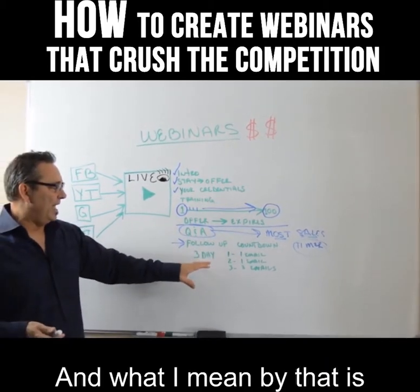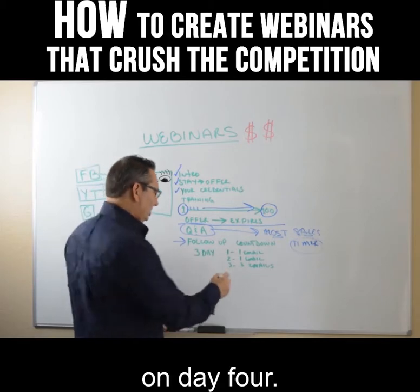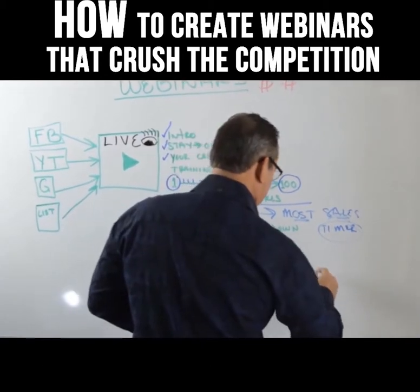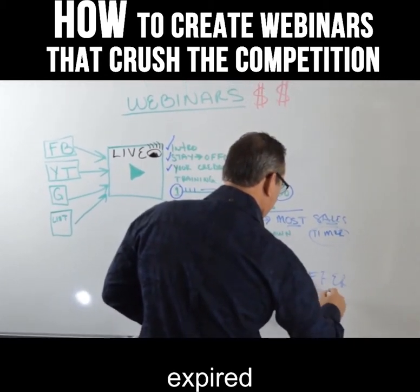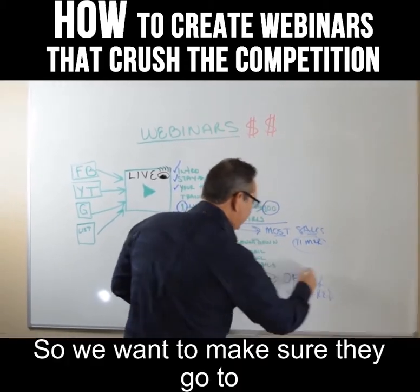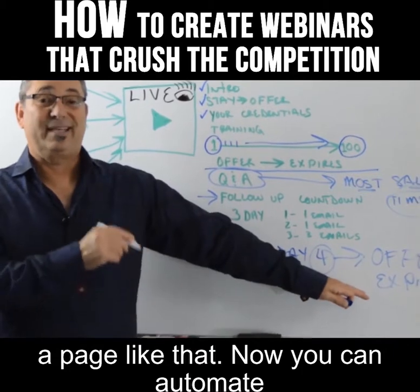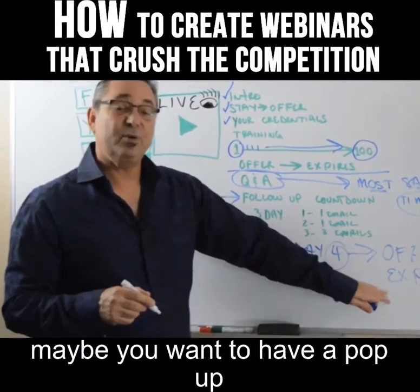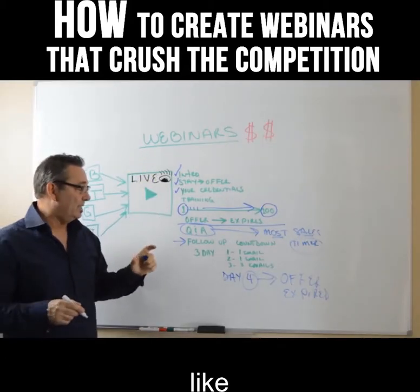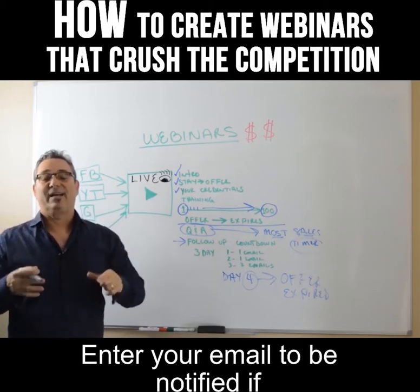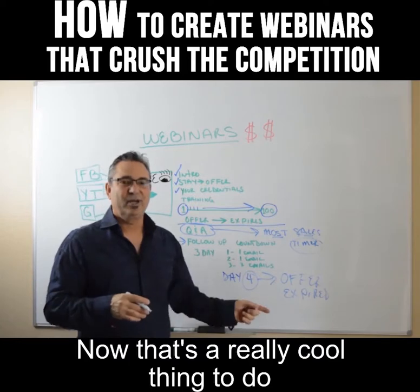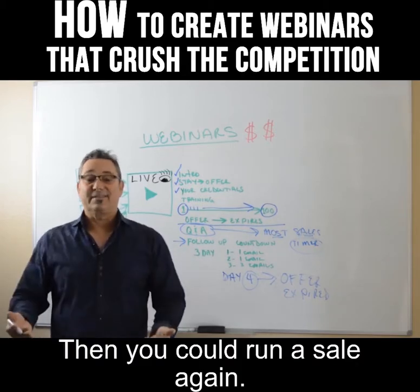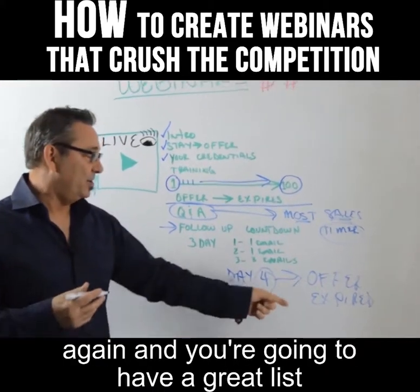The important thing is that your expiration deadline must be real. On day four, when they visit the page, it should actually show 'Offer Expired.' You can automate this with your software easily. You can also add a pop-up on that expired page saying something like, 'This offer has expired — enter your email to be notified if it becomes available again.' When people opt in, you can tag them as still interested and run that sale again for a ready-to-buy list.